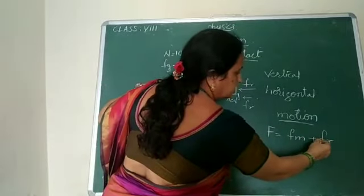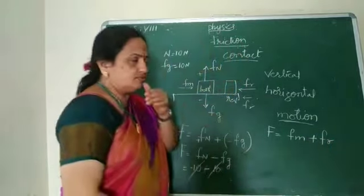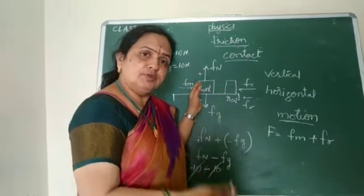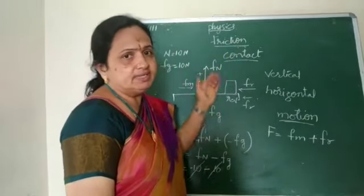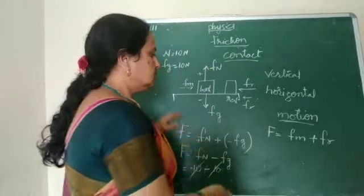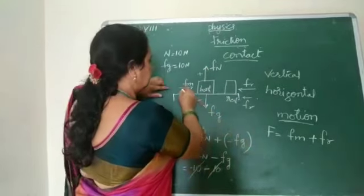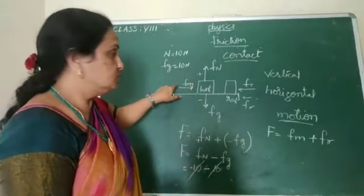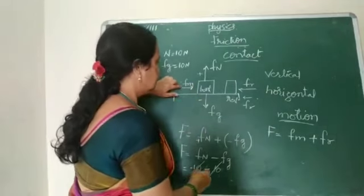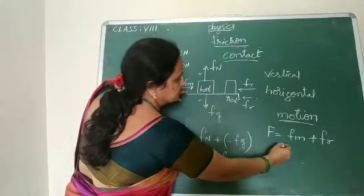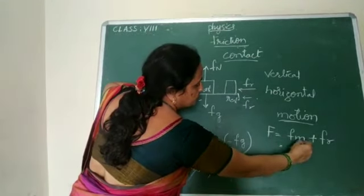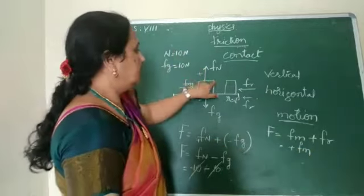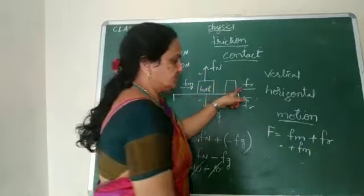We already know that the frictional force is acting on a moving object and on a resting object. The sign conventions are best to use to determine the direction. If we take the positive direction as muscular force, and the friction force is in the opposite direction, we take it as negative.